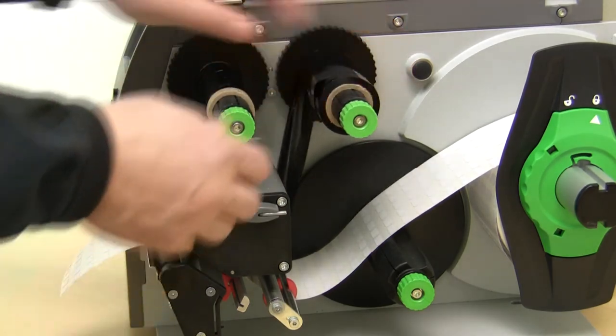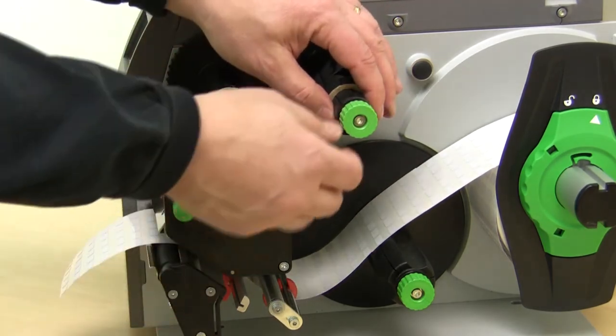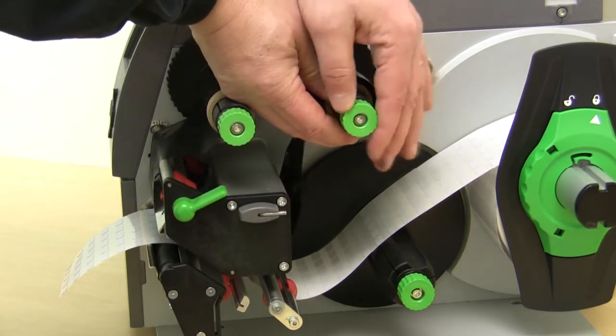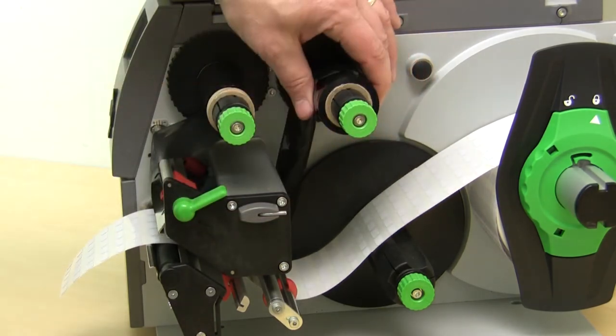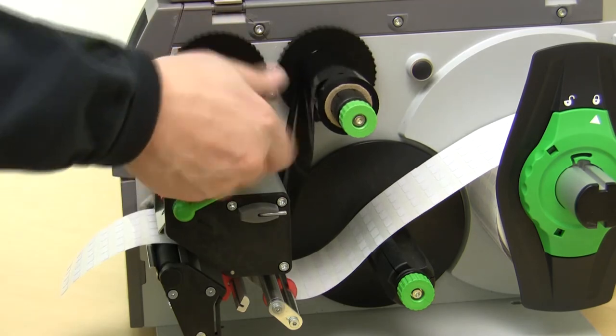We do need to tighten the spindle on the ribbon supply spindle as well. A few turns of the knob counter clockwise will do that and then we can roll it smooth.